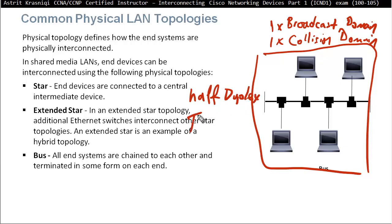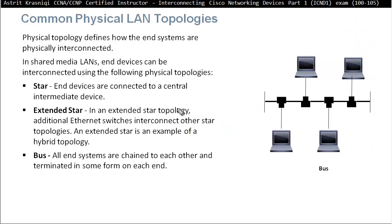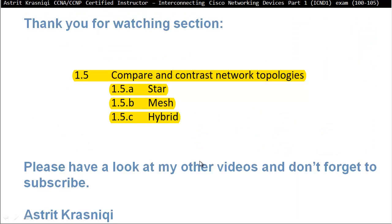The switch works as full duplex. Half duplex is like a walkie-talkie — you can press the button and talk, but you can't talk and hear at the same time. Full duplex is like a mobile phone conversation. Thank you for watching section 1.5, compare and contrast network topologies. We talked about star topology, mesh topology, and hybrid topology.